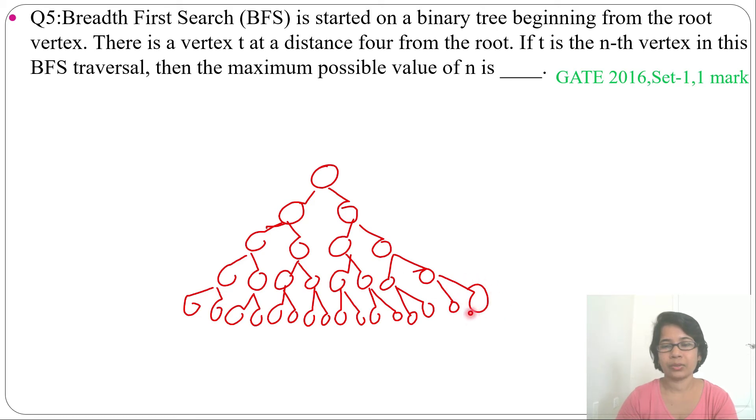It is asking when this node will come, or you can say indirectly it is asking how many nodes can be possible in a binary tree of height 4. You know already that formula: a binary tree of height 4, then maximum number of nodes possible is 2^(h+1) - 1, that is 2^(4+1) - 1, this is 2^5, that is 32 minus 1, this is 31.